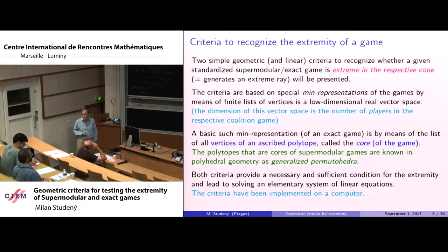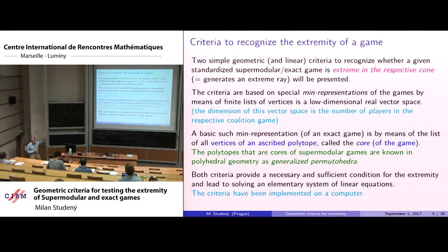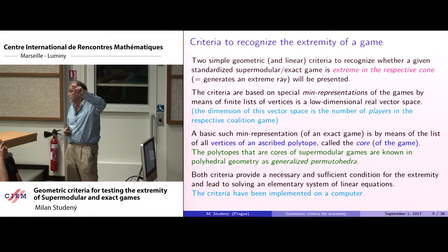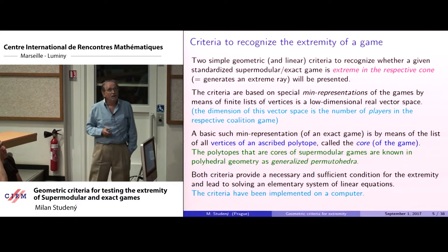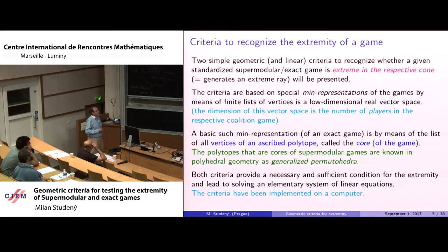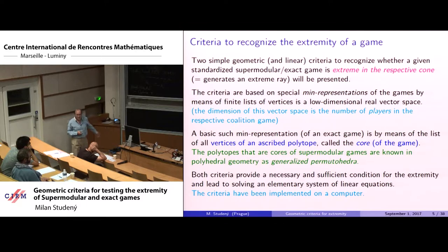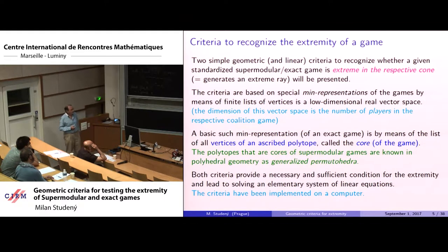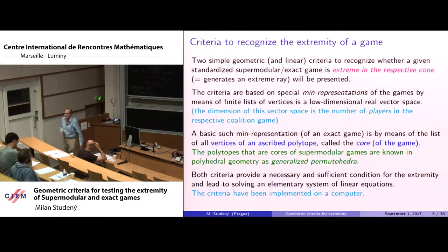These criteria are based on special min representations of the games, represented by a finite list of vertices in a low-dimensional space whose dimension is just the number of players. The basic such min representation uses vertices of a certain associated polytope called the core, which is known in polyhedral geometry as generalized permutahedra. The criteria provide both necessary and sufficient conditions for extremity and lead to solving an elementary system of linear equations.